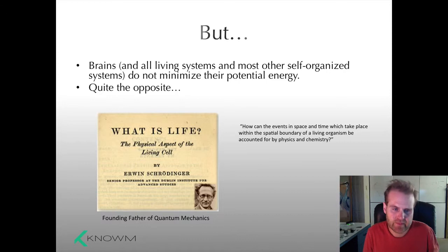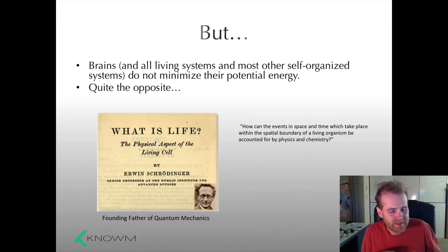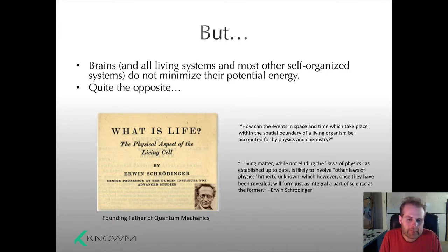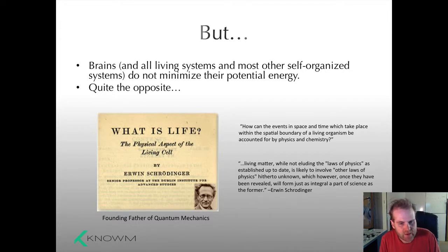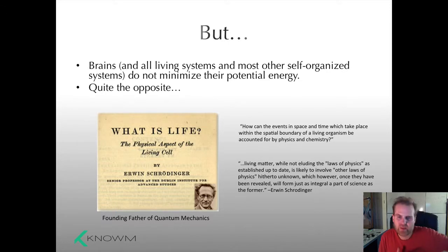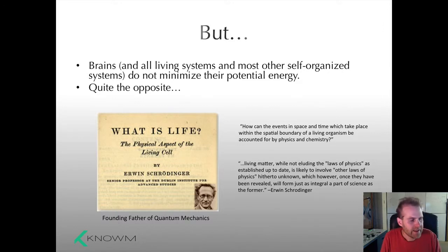Schrödinger made a bunch of really amazing observations, some of which basically led to the discovery of DNA. He also said: 'Living matter, while not eluding the laws of physics as established up to date, is likely to involve other laws of physics hitherto unknown, which, once they have been revealed, will form just as integral a part of science as the former.' He's saying that living systems aren't disobeying the laws of physics — specifically thermodynamics and the second law. We export entropy into the environment; by being energy dissipating systems, we're not a closed box separate from our environment. Therefore the second law doesn't really apply to us individually — it applies to the bigger picture.